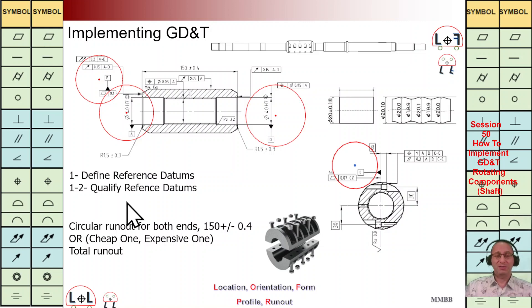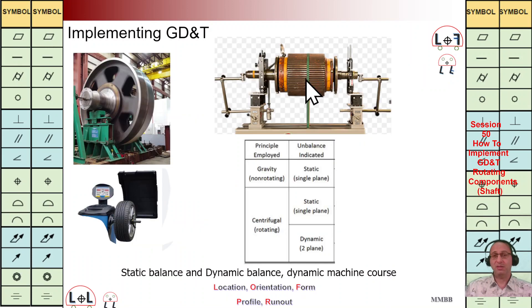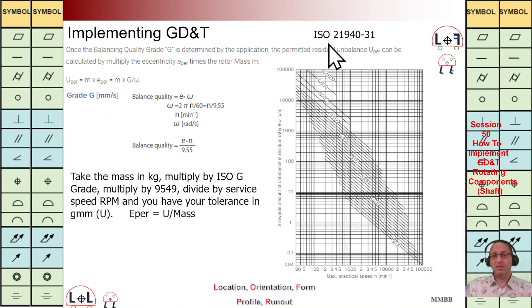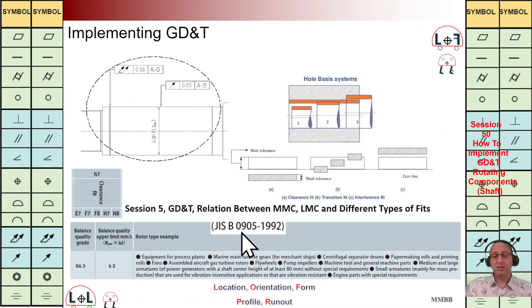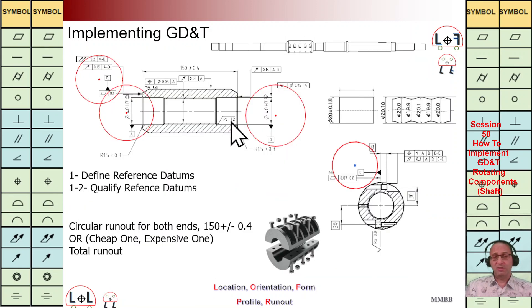Hello everybody, glad to see you today. We're going to talk about needed GD&T for this rotating component — let's call it a shaft coupling. In the last two sessions we talked about the shaft on the right-hand side and the balanced quality grade based on ISO 21940-31 and GISB 0905-1992.